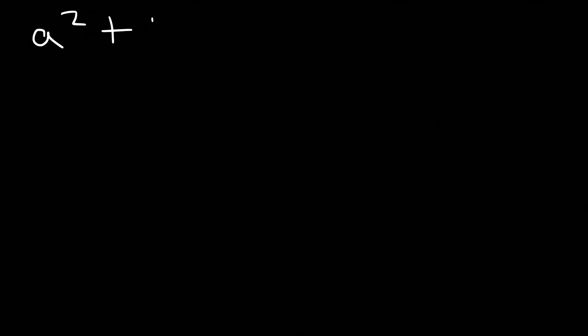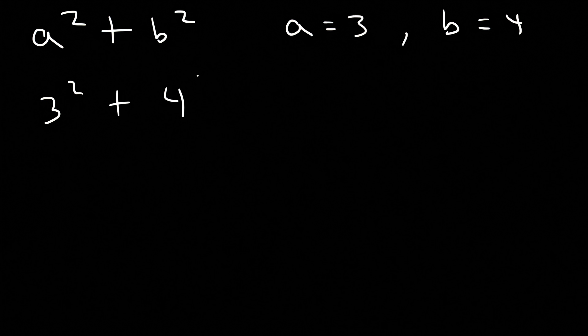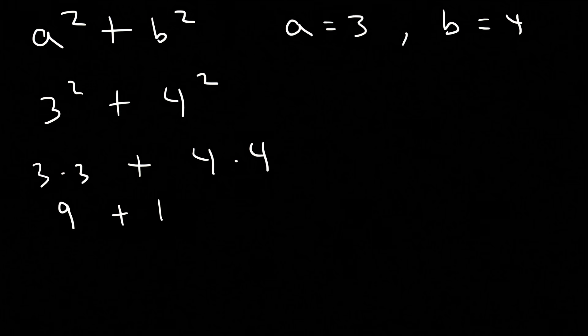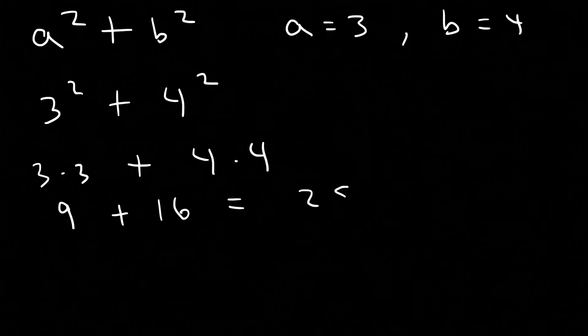Other times you may need to evaluate expressions. For example, evaluate a squared plus b squared, where a equals 3 and b equals 4. The first thing to do is plug in the numbers — replace a with 3 and b with 4, then evaluate. 3 squared is 3 times 3; 4 squared is 4 times 4. 3 times 3 is 9, and 4 times 4 is 16. So this adds up to 25.